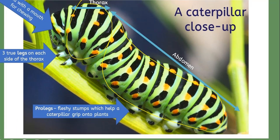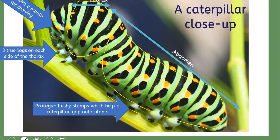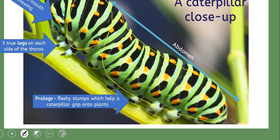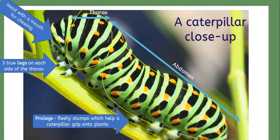They have legs that help them stay on plants and leaves, and a mouth with a head for chewing, because caterpillars chew leaves — they don't drink nectar.